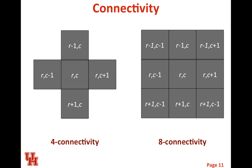The first thing we need to define is what we mean by something being connected. There are two different notions of connectivity in a 2D planar image. The first one is 4-connectivity: a pixel specified by its row and column is connected to the pixel above it (row minus one, same column), the pixel to the right (column plus one), the pixel beneath it (row plus one), and the one to the left. MATLAB lets you specify either 4-connectivity or 8-connectivity — 8-connectivity adds in the diagonals.